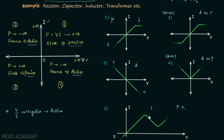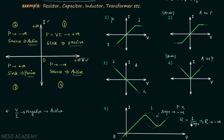Let us understand why the element is actually active. If you focus on a particular region of the characteristics curve, you will find the slope is negative. Since resistance equals 1 over the slope, a negative slope implies a negative resistance. A normal resistance acts as a sink, so a negative resistance acts as a source — meaning the element acts as a source in that region and is therefore an active element.